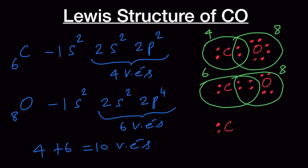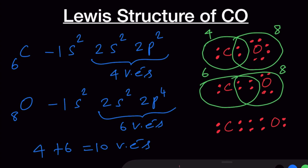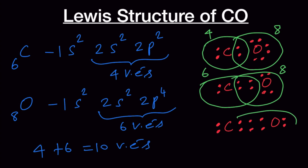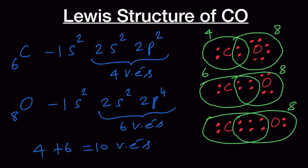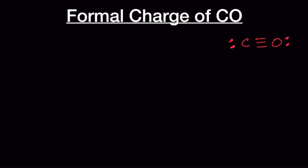Now carbon has 1 lone pair and 3 bond pairs — 1, 2, 3, 4, 5, 6 — and oxygen has one lone pair. Checking the octet: we have 8 electrons around oxygen and 8 electrons around carbon as well. One could also draw the structure as: carbon triple bond oxygen, with one lone pair on carbon and one lone pair on oxygen.